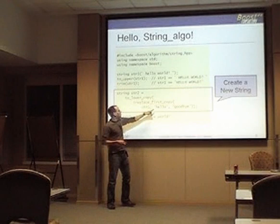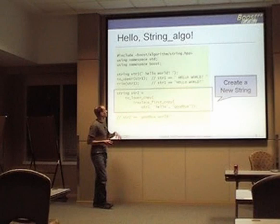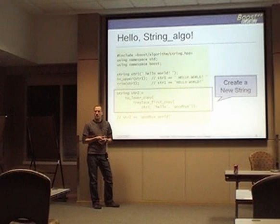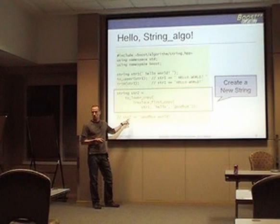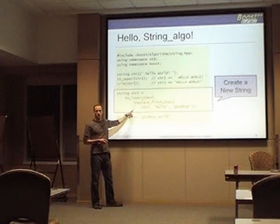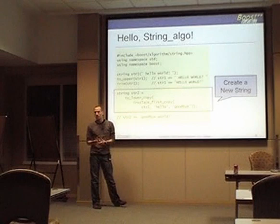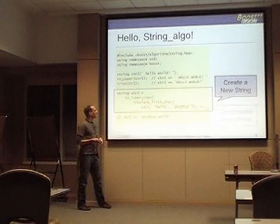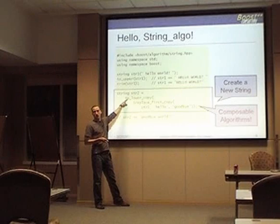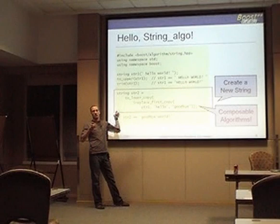Something to know about the string algorithm libraries — there are some conventions. Every algorithm comes in two variants: the regular one, and one that has 'copy' on the end. So there's a to_upper_copy which will not mutate in place but create a copy and return it. People here familiar with the standard template library and the standard algorithms — they work on iterators. No iterators here. This is a range-based interface. It lets you stack your algorithms: call one algorithm, use its return value immediately, and call another algorithm that mutates the string further. These algorithms are composable — you can express a lot in just a little line of code.